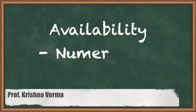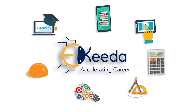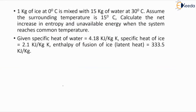Hello everyone. In this video I am going to discuss another numerical which is related to the concept of availability and irreversibility. Let's start the numerical. 1 kg of ice at 0 degree centigrade is mixed with 15 kg of water at 30 degree centigrade. Assume the surrounding temperature is 15 degree centigrade. Calculate the net increase in entropy and unavailable energy when the system reaches common temperature.